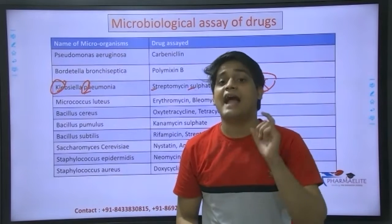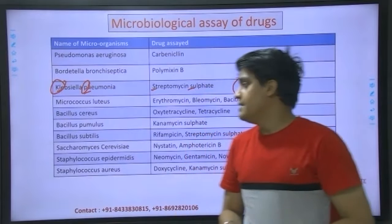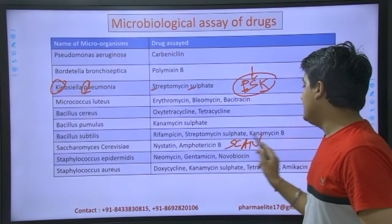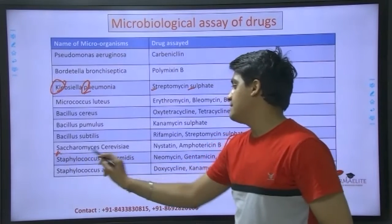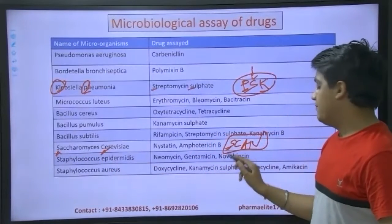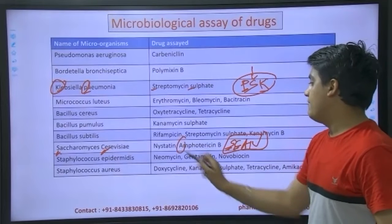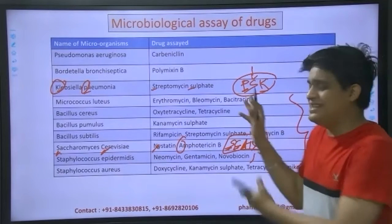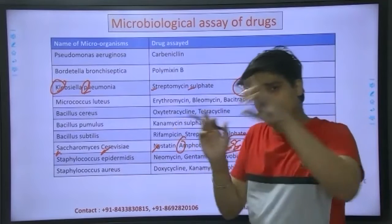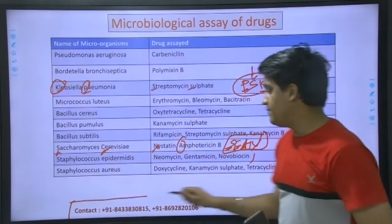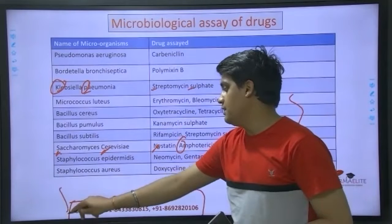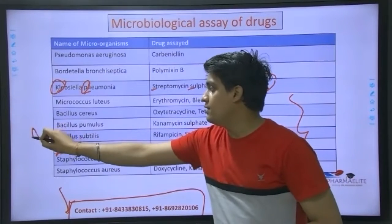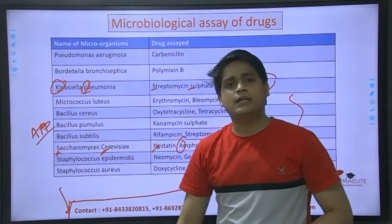Keep it as simple and easy as possible. Same way you can go ahead with the rest - for Saccharomyces cerevisiae: S for Saccharomyces, C for cerevisiae, A for amphotericin B. That's how you can make mnemonics for the entire list. The list is a bit big - if you want the entire PDF, just call on this particular number. More information is in the description; the app download link is already there - if you have not downloaded it, do it now.